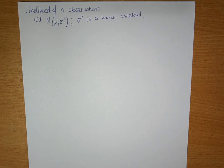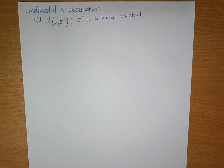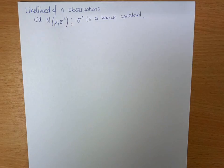Today we're going to discuss how to work through finding the likelihood of n observations which are IID, so independent, identically distributed according to a normal distribution with mean mu and variance sigma squared, where sigma squared is a known constant.